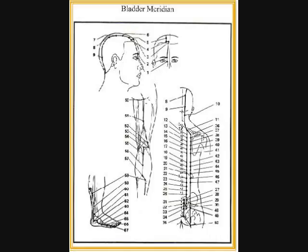UB42: pulmonary tuberculosis, spitting of blood, cough, asthma, stiff neck, pain in the shoulder and back. UB43: pulmonary tuberculosis, cough, asthma, spitting of blood, night sweating, poor memory, nocturnal emission. UB44: asthma, cardiac pain, palpitations, stuffy chest, cough, stiffness and pain of the back.